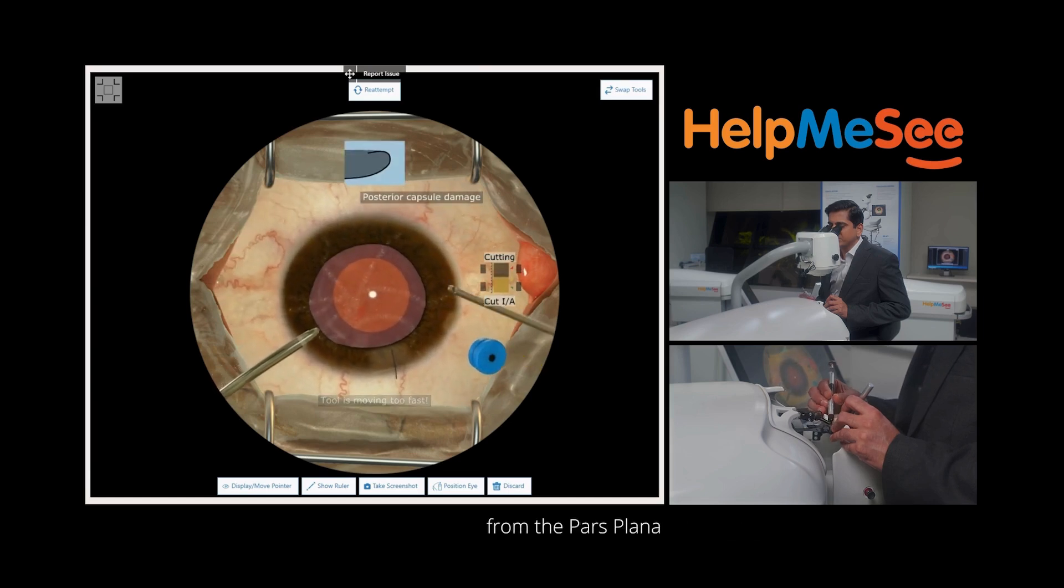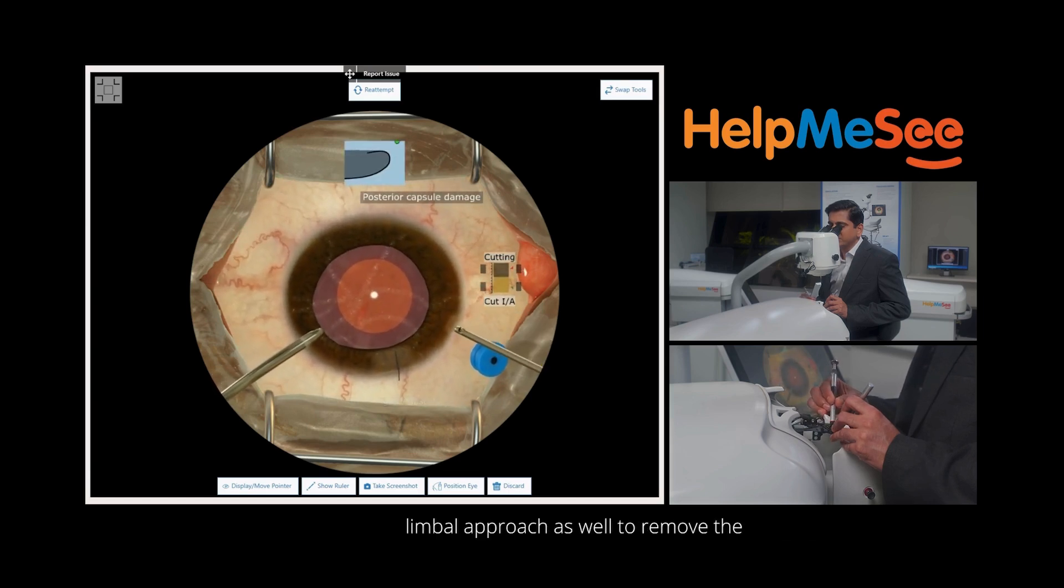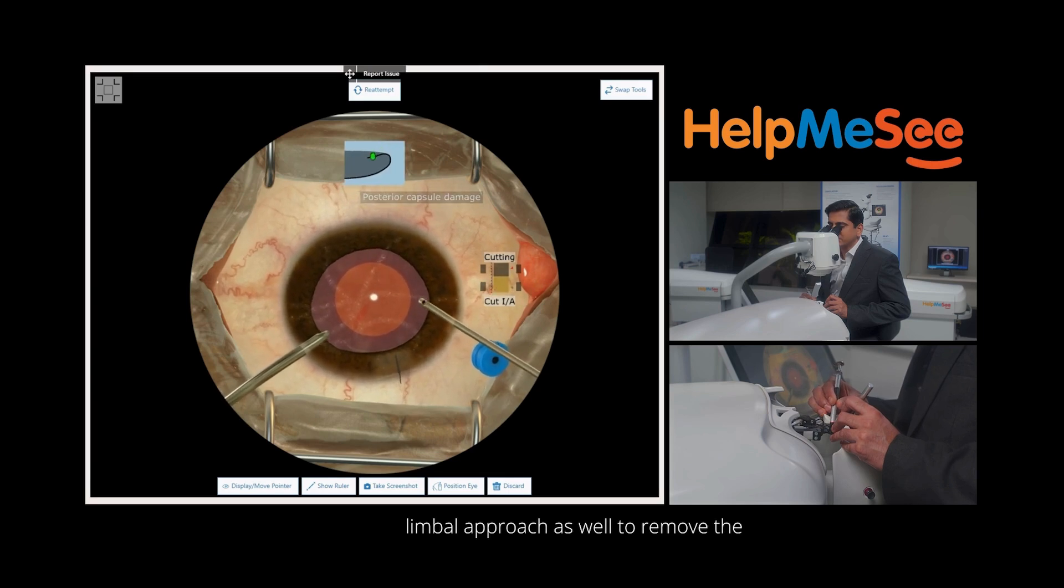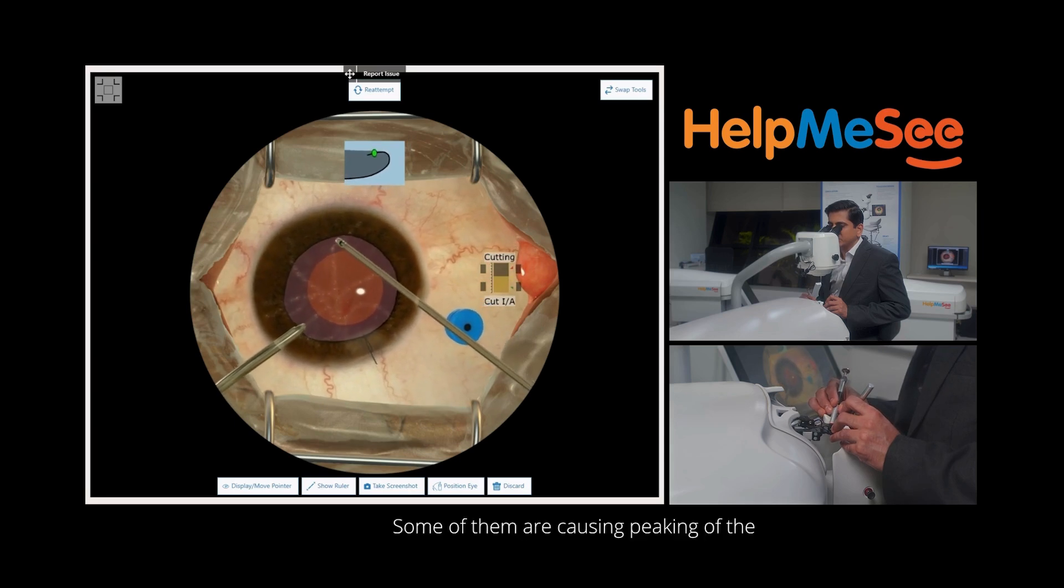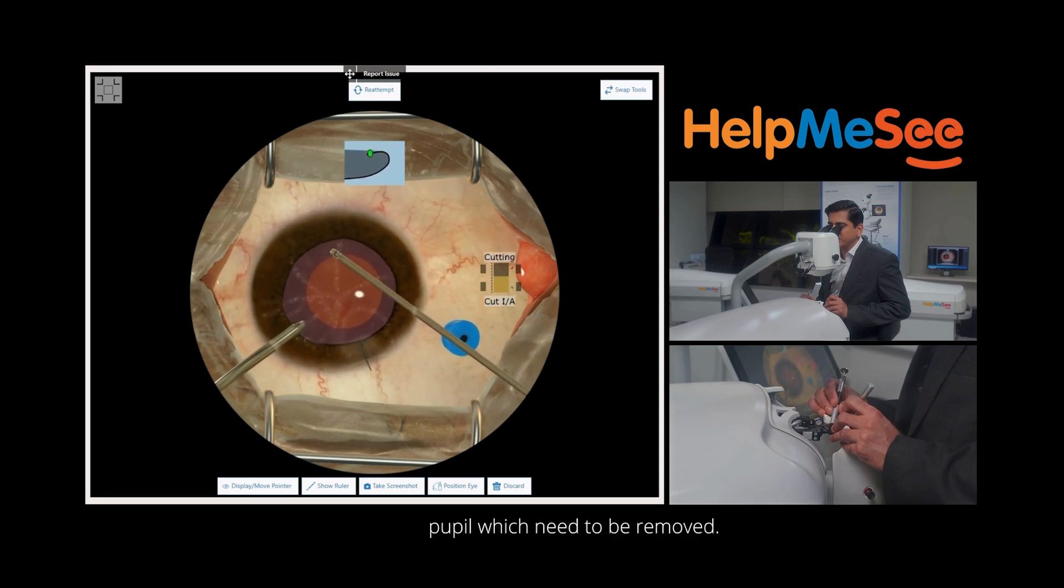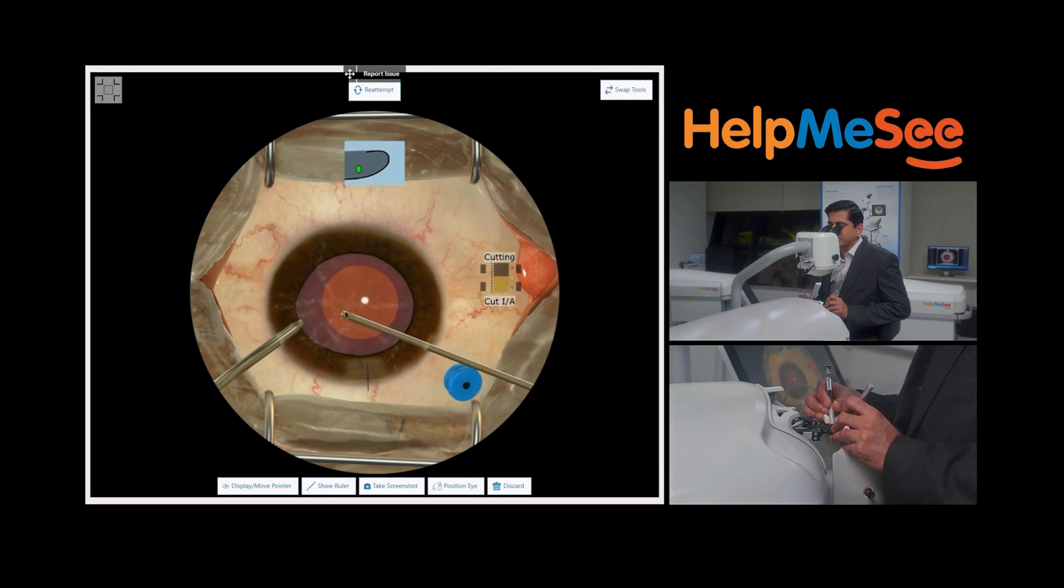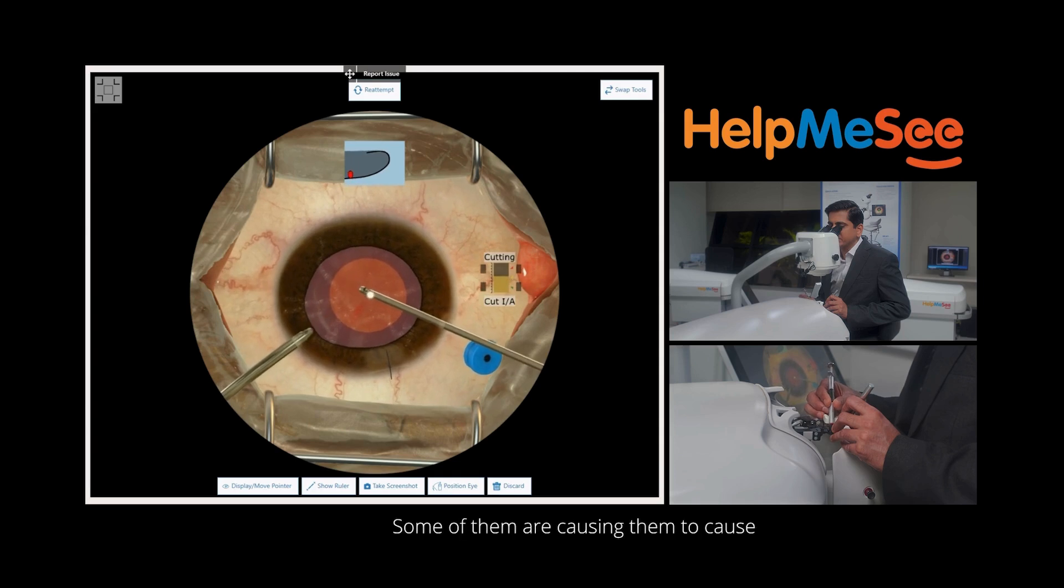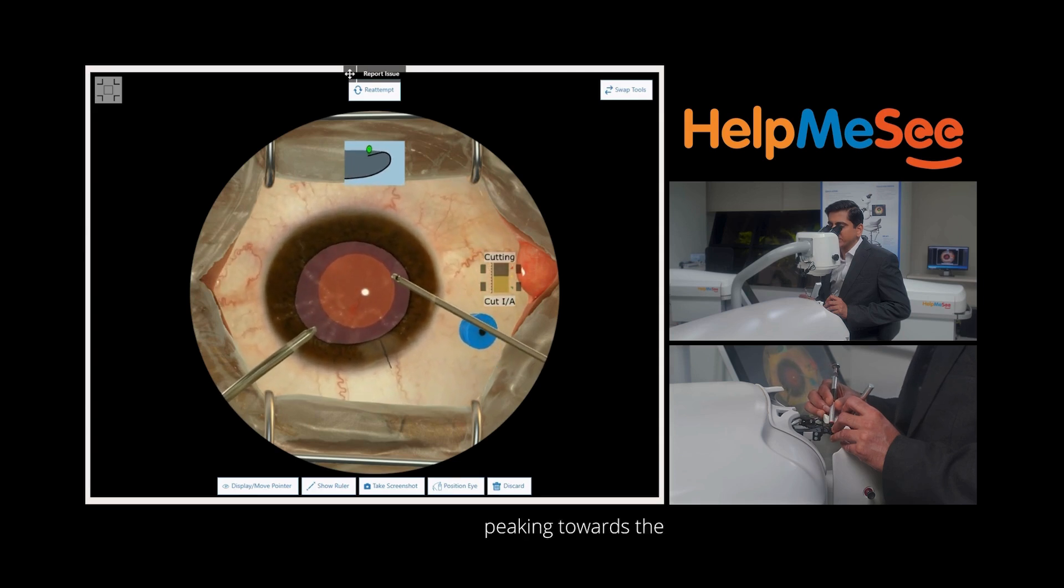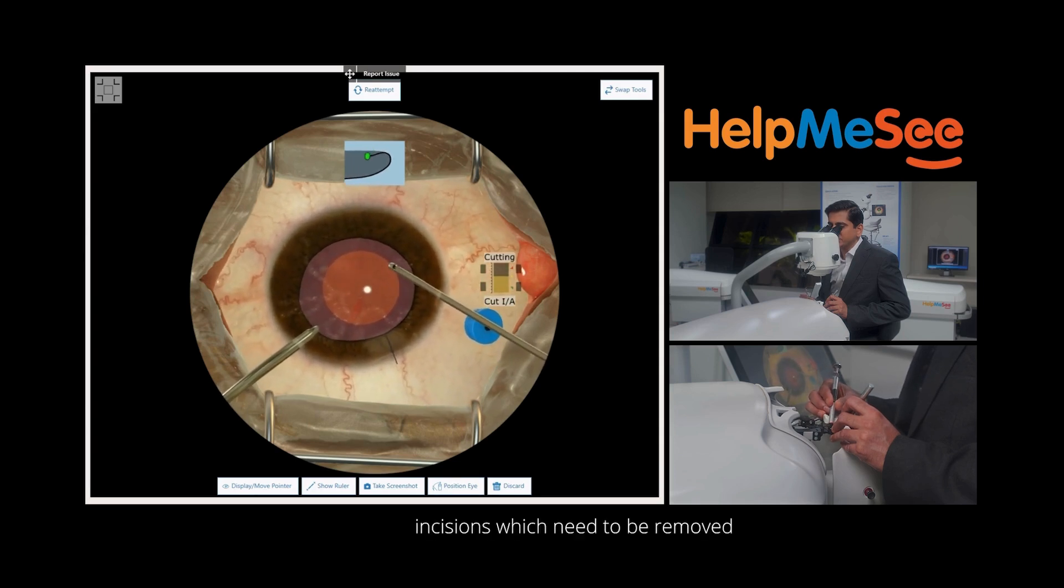Once we have removed sufficient vitreous from the pars plana approach, we can use the limbal approach as well to remove the strands which are free floating into the anterior chamber. Some of them are causing peaking of the pupil which need to be removed. Some are causing damage to the incisions and peaking towards the incisions which need to be removed as well.